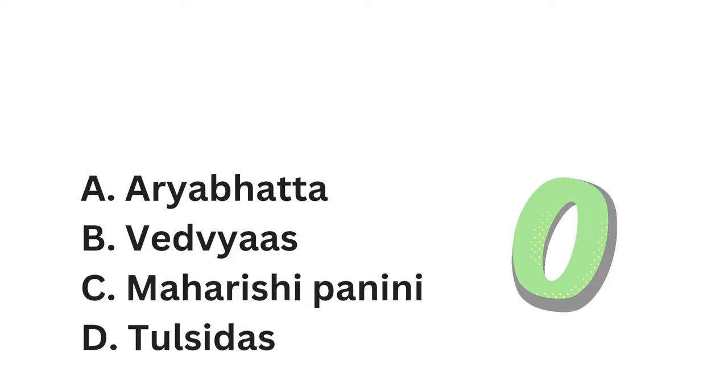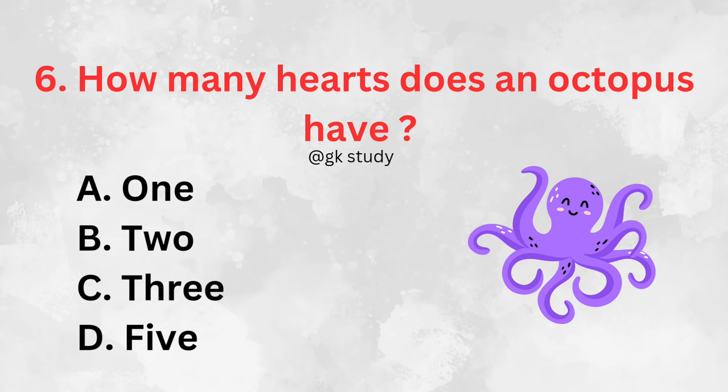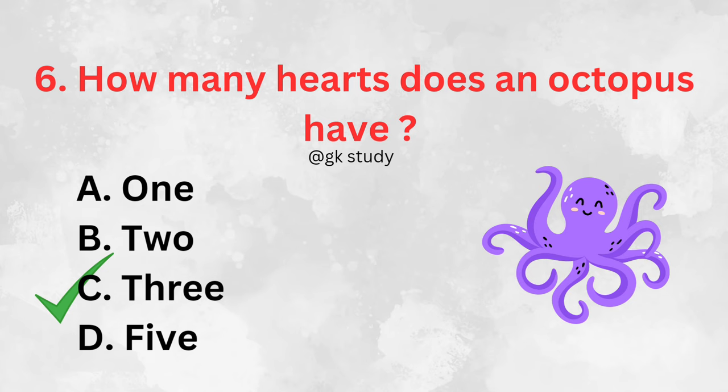How many hearts does an octopus have? Answer is 3.